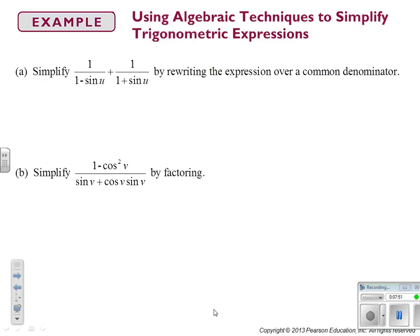We're going to simplify 1 over (1 − sin u) plus 1 over (1 + sin u) by rewriting the expression over a common denominator. Highlight 'common denominator' — that is another method we use when fussing with trig functions. Finding a common denominator is a starting point. If you're inside a trig identity and don't know where to start, a common denominator is one way.